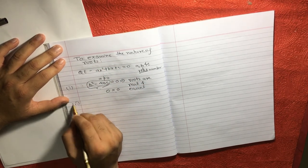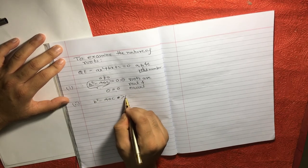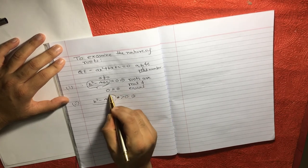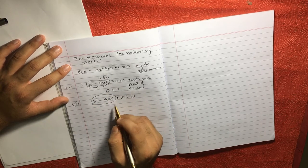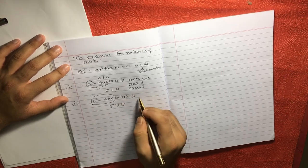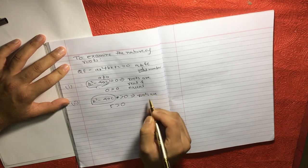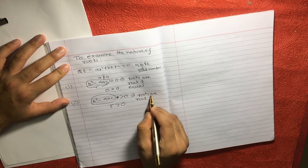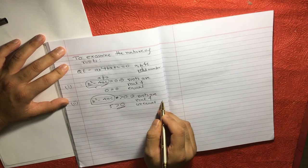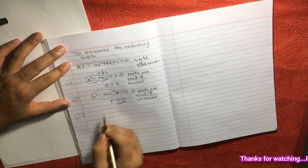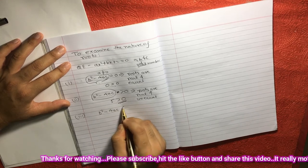Now, another one will be in case B square minus 4AC is greater than 0. What does it mean? Means, after solving this equation, if the result of B square minus 4AC is greater than 0, let's say 5, which is greater than 0, then we can say roots are real, of course, and unequal because this is not equal to 0.